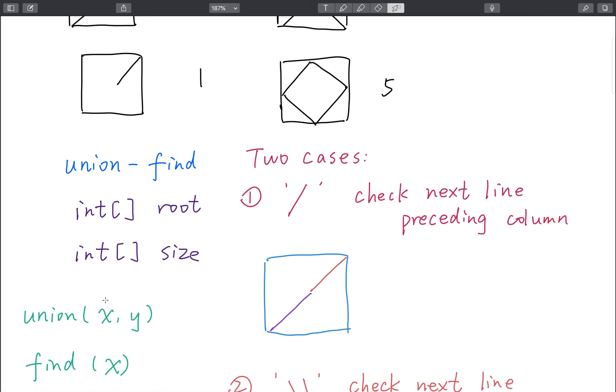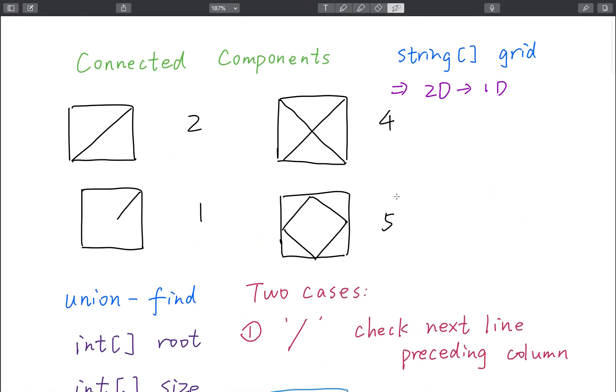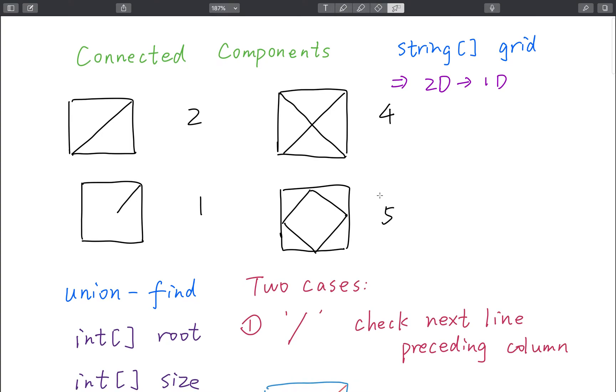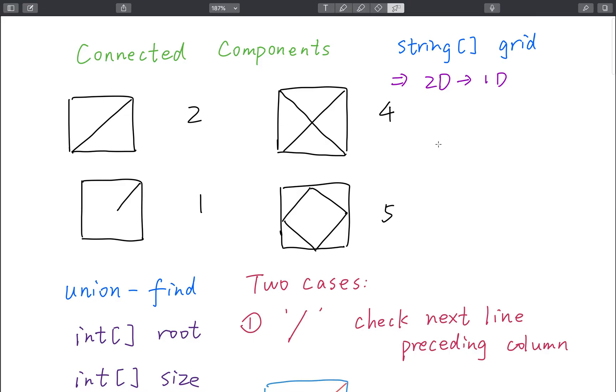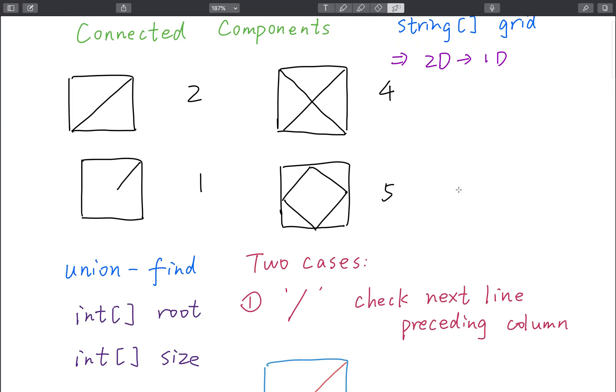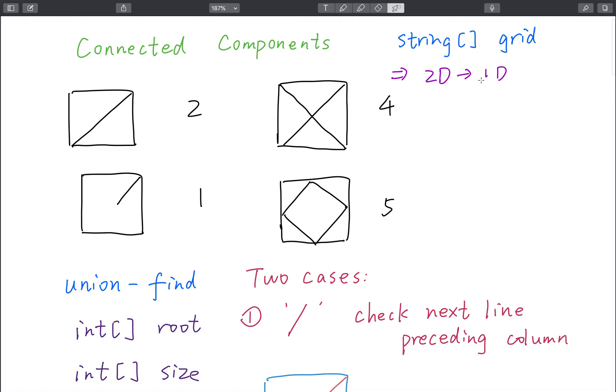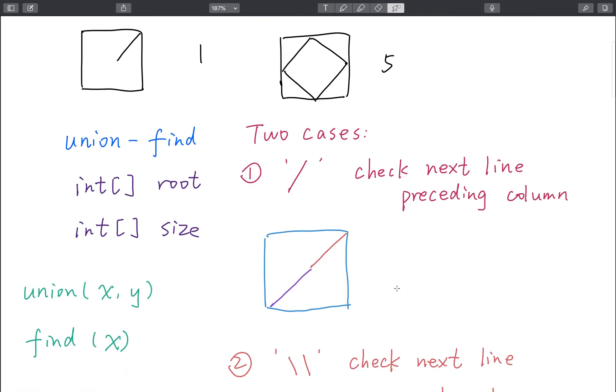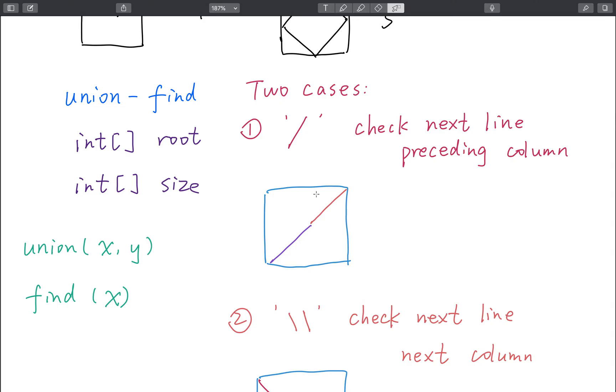The problem is how to use this classic union-find to solve this question. The given grid you can treat like a 2D character array. One thing is that we need to convert it to a 1D array. That's easy, we just need to do some index calculation.